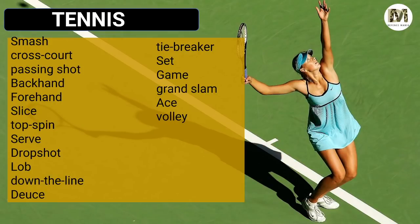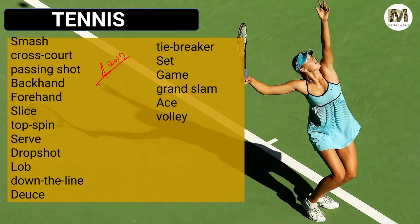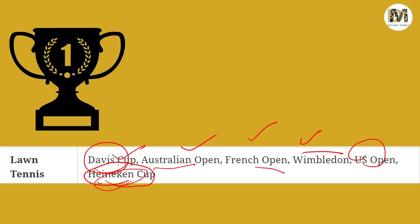Now Tennis — if it comes by the name Lawn Tennis, do not get confused; this is tennis only. Tennis terms: Smash, Cross Court, Passing Shot, Backhand, Forehand, Slice, Top Spin, Serve, Drop Shot, Lob, Down the Line, Deuce, Tiebreaker, Set, Game, Grand Slam, Ace, and Volley. Tennis cups: Davis Cup, Australian Open, French Open, Wimbledon, US Open, and Heineken Cup. The four opens are obvious, but Davis Cup and Heineken Cup are important to remember.